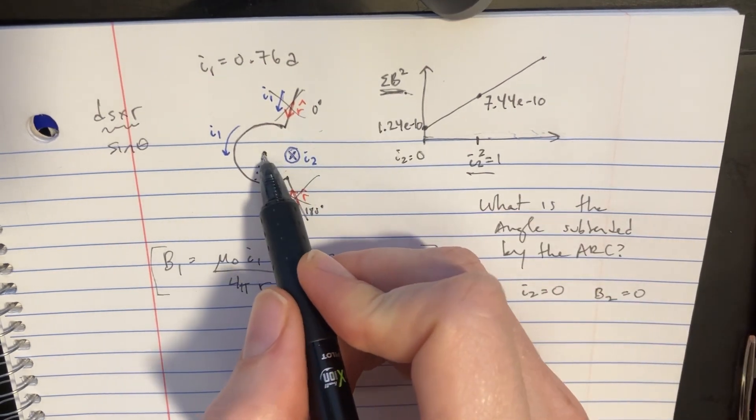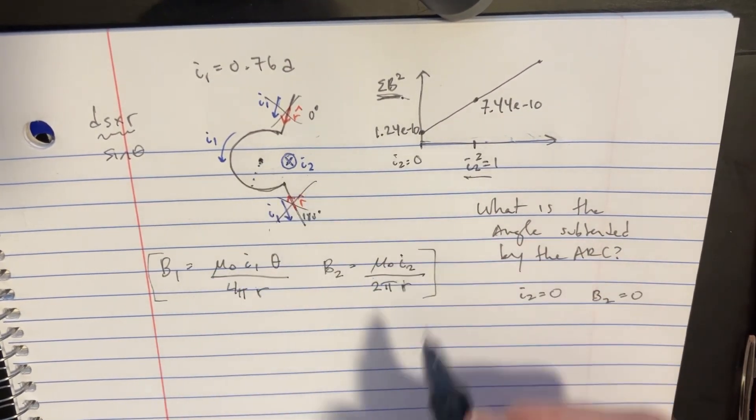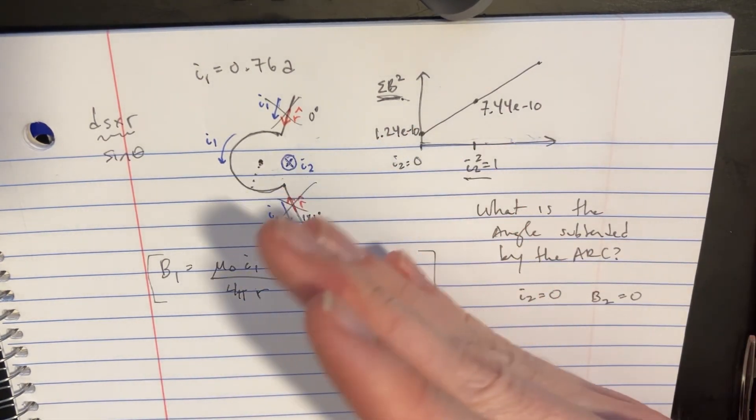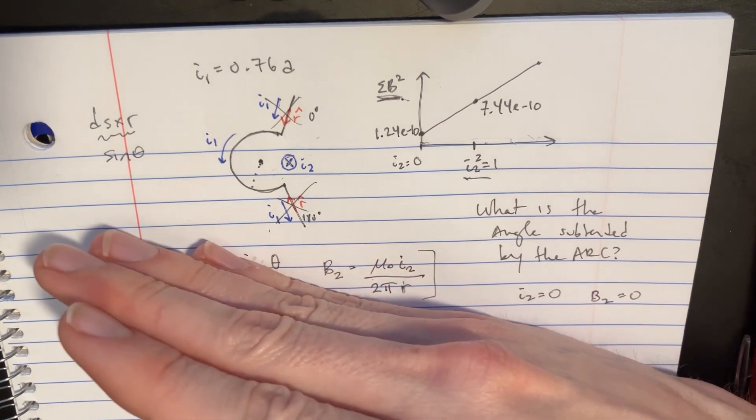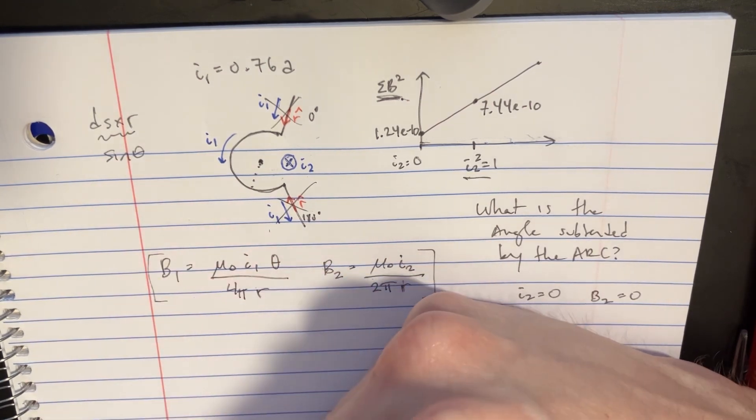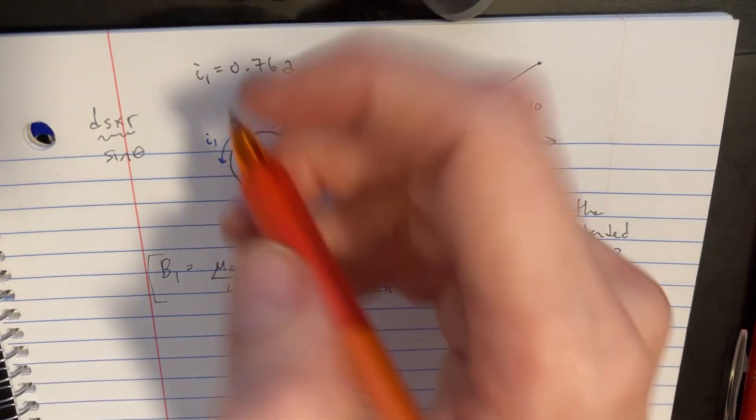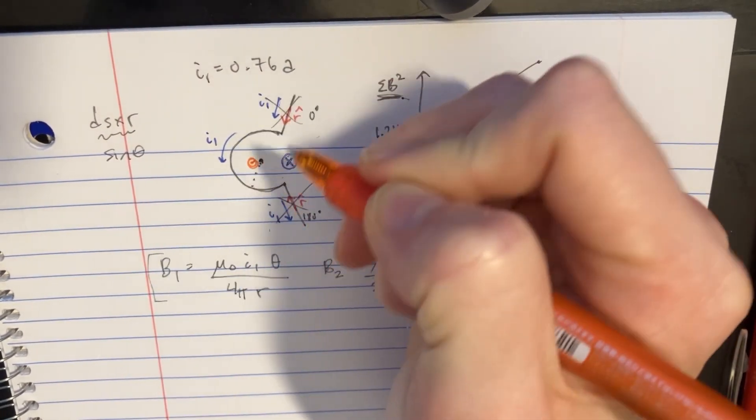And if we want to figure out what that point is over there, let's try to do that cross product now. We'll start with our thing going that way. We're curling inwards. And we would get a B going in the up direction if we were to follow that.